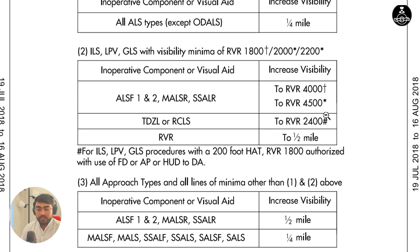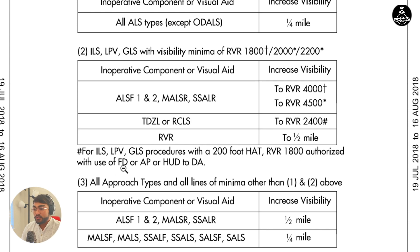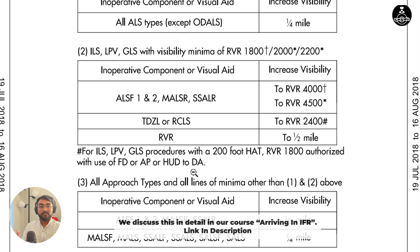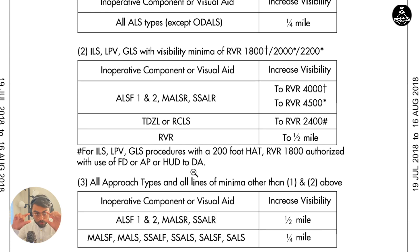Now let's see what the hashtag or pound sign signifies. For ILS, LPV, and GLS procedures with 200-foot height above touchdown — Category 1 ILS — RVR 1800 is authorized with the use of a flight director, autopilot, or heads-up display to the decision altitude. A flight director, autopilot, or heads-up display makes it easier to fly an instrument approach precisely — that's why reduced minimums may apply. Check out the notes section of every approach plate to see if there are lower minimums.